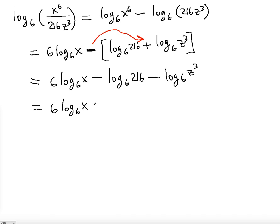We know that we can express 216 with base 6 raised to a power. 6 squared is 36, 36 times 6 is exactly 216, so it's going to be to the third power. Minus - so now here we go, the power here will go down. So the 3 goes down and we're going to have log base 6 z.